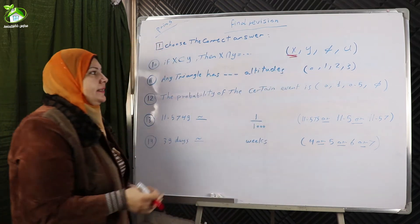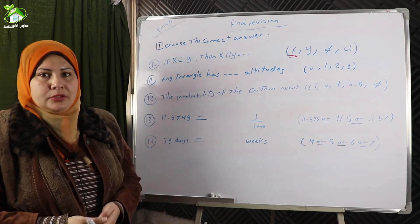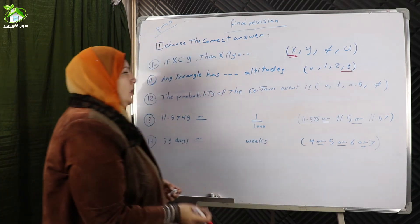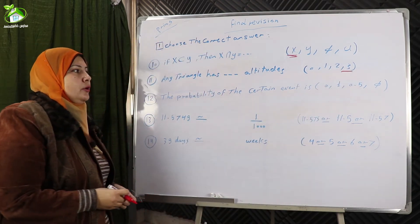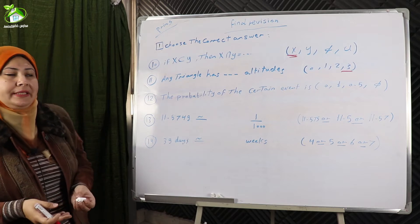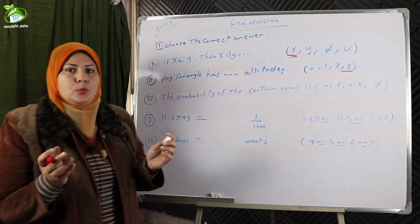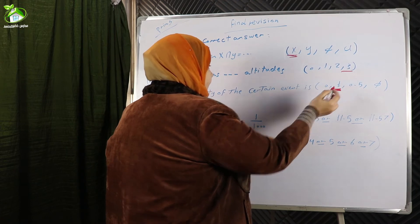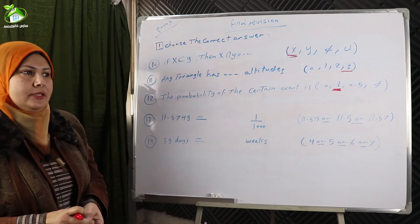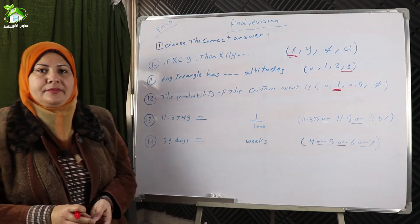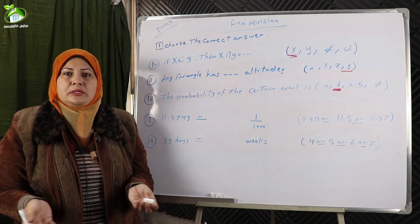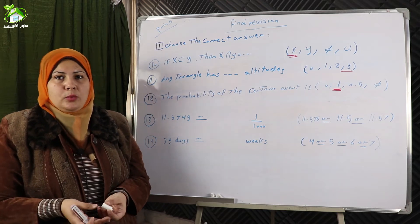Number eleven: any triangle has three altitudes. Number twelve: the probability of a certain event equals one. We know that the probability of a certain event equals one and the probability of an impossible event equals zero.